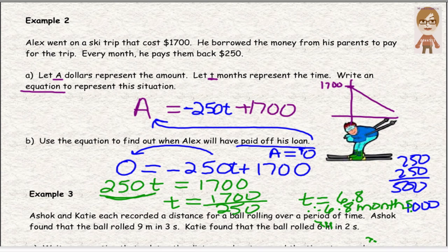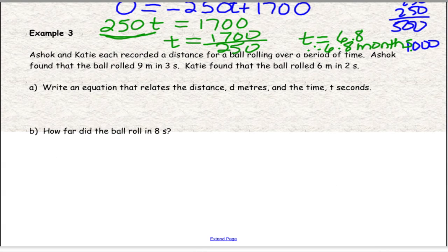Last example. Example 3: Ashok and Katie recorded a distance for a ball rolling over a period of time. Ashok found that the ball rolled 9 meters in 3 seconds, and Katie found that the ball rolled 6 meters in 2 seconds. Write an equation that relates the distance d and the time in t seconds. So the distance is equal to, we need a rate here, we need a speed. If Ashok found that the ball rolled 9 meters in 3 seconds, if I take 9 meters and divide it by 3, that's 3 meters per second.